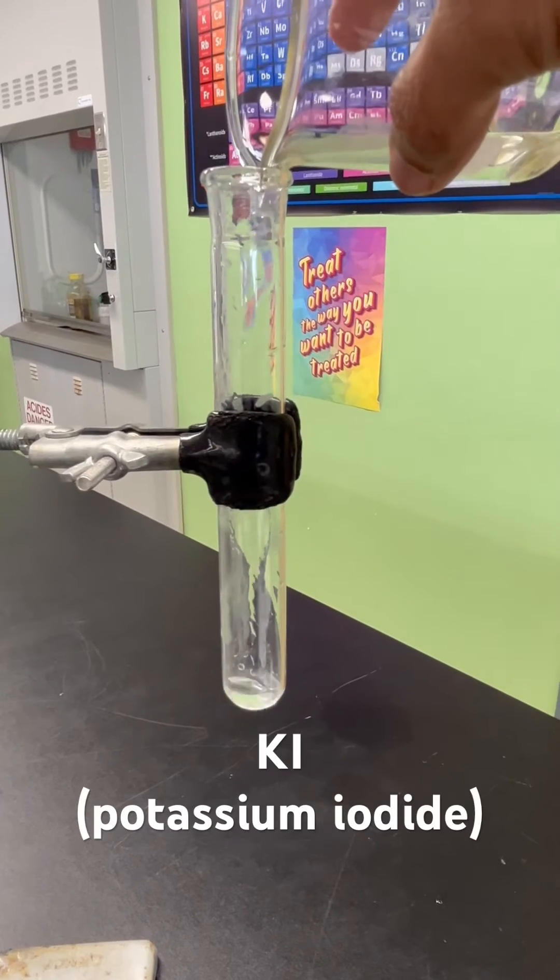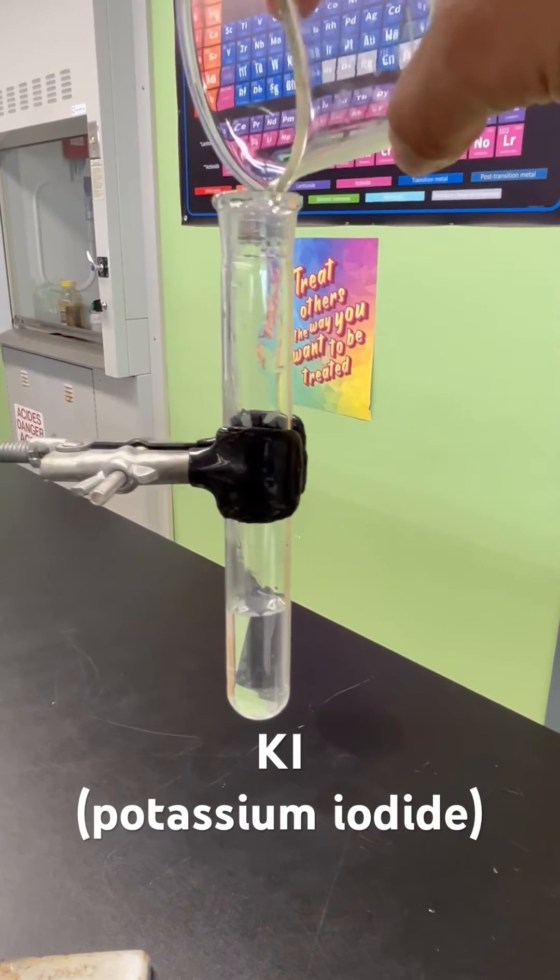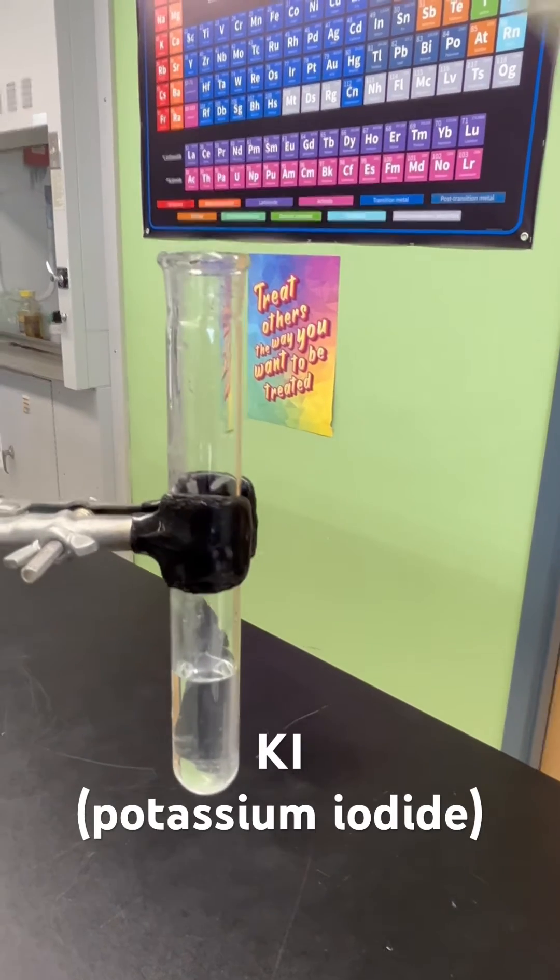We're going to add some potassium iodide to our test tube, which as you see is clear, a colorless liquid.